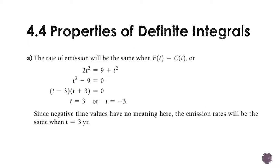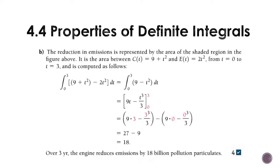Setting them equal to zero, we get T equals three or negative three. Negative three has no meaning because it's a time, and time is not negative. So, when I said it's about three years, I called that pretty well there. It did look like three, and it was three. But you should always check. Part B. We're going to integrate from zero to three. We're going to do C of T because it's on top, minus E of T. Please watch for the minus there. And so, we have nine minus T squared. Taking the antiderivative, we get nine T minus T to the third over three. And then evaluating that at three and zero, we get 18. So, over three years, the engine reduces emissions by 18 billion pollution particulates.